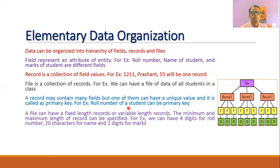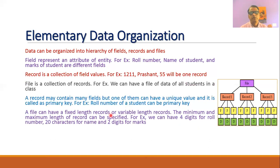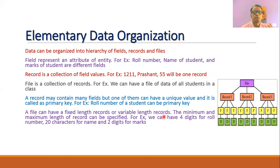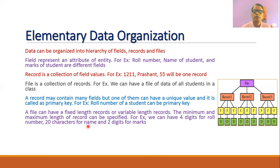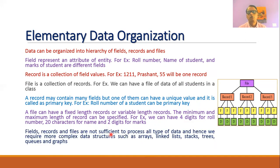A file can have fixed-length records, but it is also possible to have variable-length records. For variable-length records, it is necessary to specify the minimum and maximum length. For example, a roll number field may be fixed at four digits, a name field at 20 characters, and marks at two or three digits.